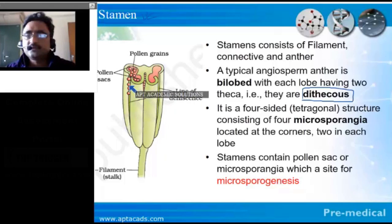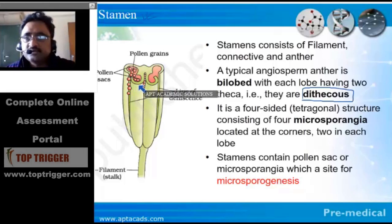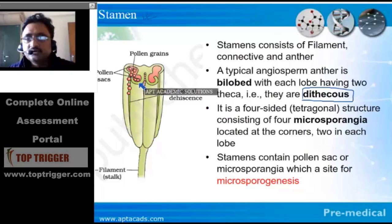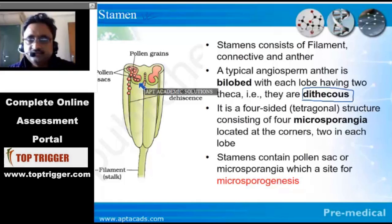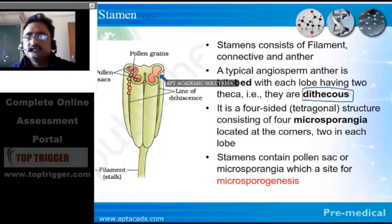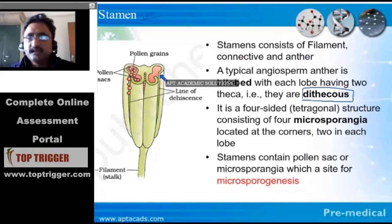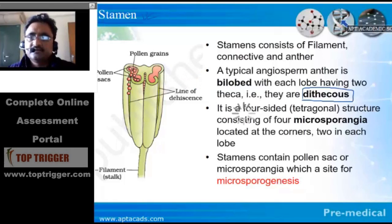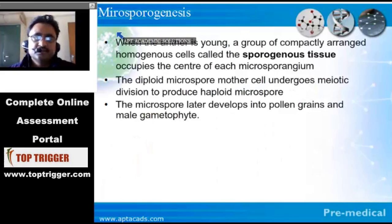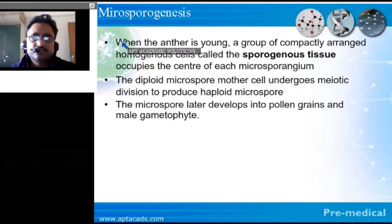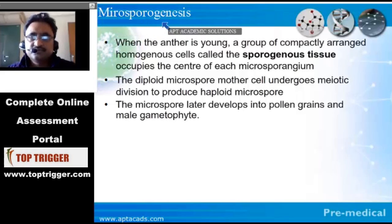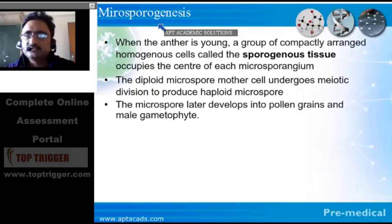What is the starting point for microsporogenesis? The starting point is the diploid microspore mother cell, which undergoes reductional division, and eventually after that reductional division it forms a microspore. So this is what we call microsporogenesis. Microsporogenesis is the formation of a spore.